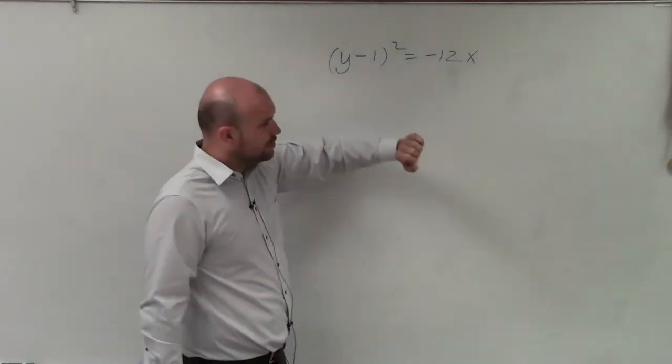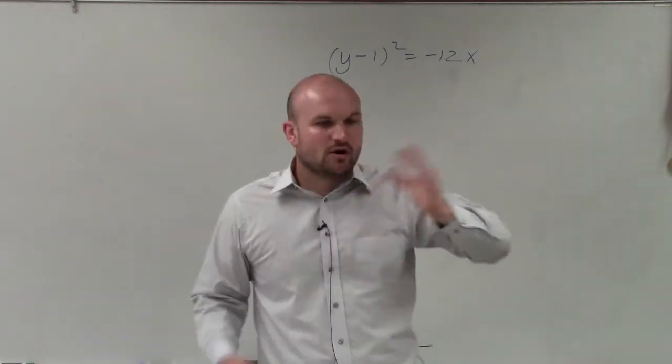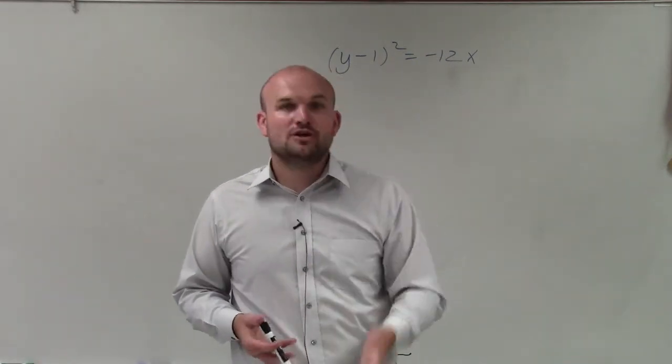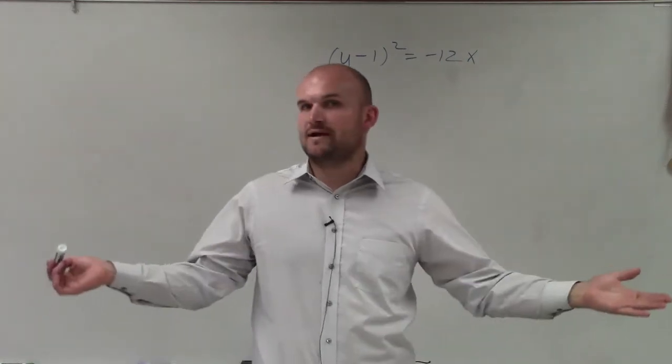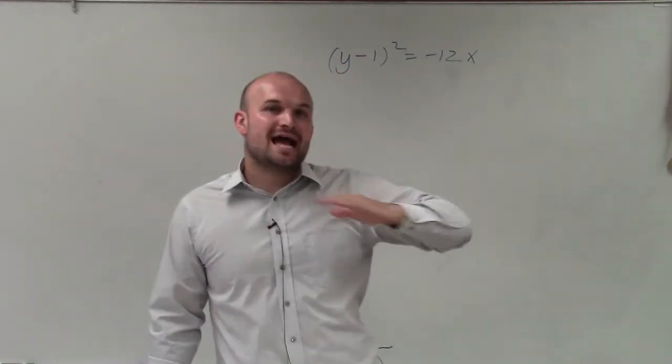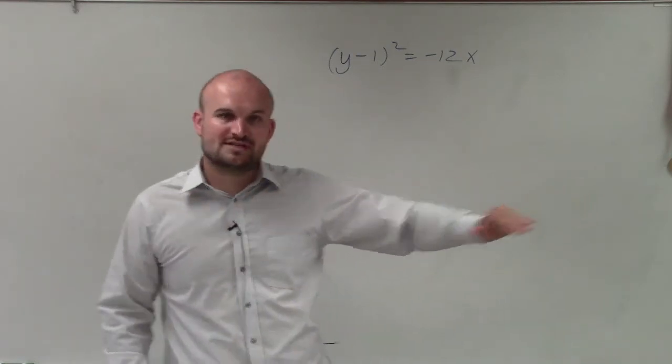To identify all this information, we need to look at our equation. From the basic idea of understanding quadratics, whenever it had a vertical axis of symmetry, we had x squared. In this case, we have y squared, so that tells us our axis of symmetry is actually horizontal.